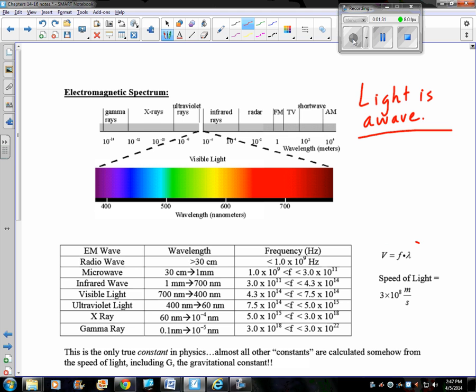Light follows the formula velocity equals frequency times wavelength. And the speed of light is 3 times 10 to the eighth meters per second.